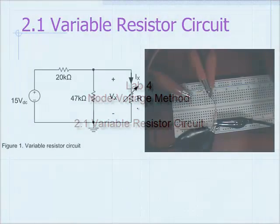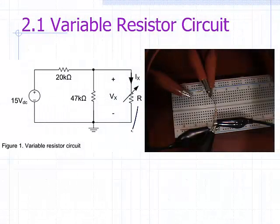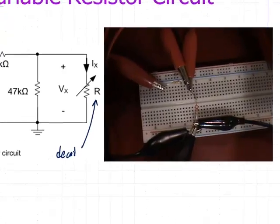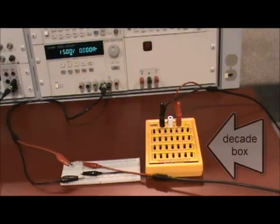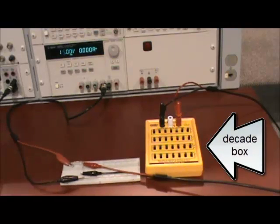The first circuit you will build is shown in figure 1 and contains two fixed resistors and a variable resistor. You will use the decade box to adjust the value of the variable resistor. Start by setting up the circuit as shown in the figure.